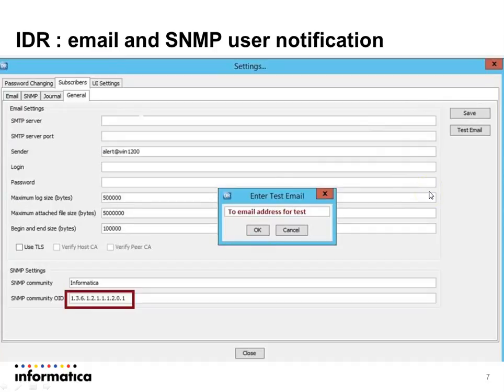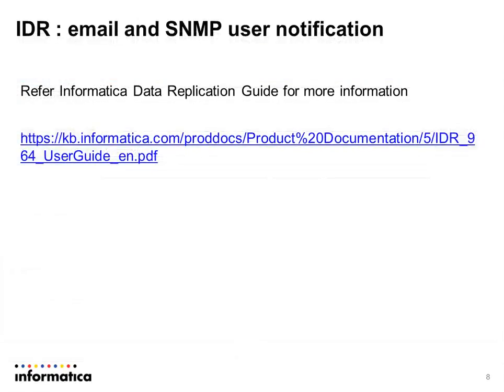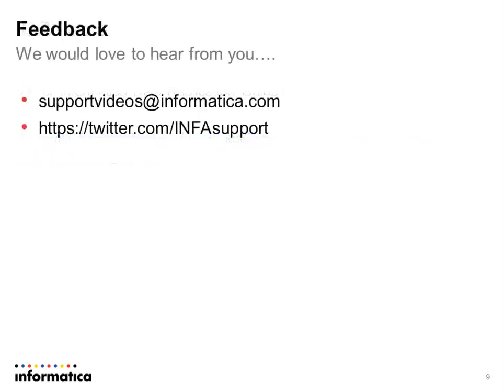Save all the settings and then exit. This is done — email and SNMP user notification settings are configured. For more information, please refer to the IDR guide; the web link for the IDR guide is provided. For any feedback, we would love to hear from you. You may write to us at supportvideos@informatica.com or twitter.com/infosupport. Thank you.